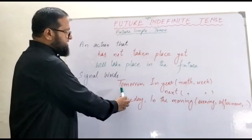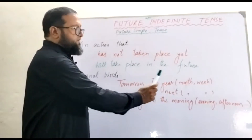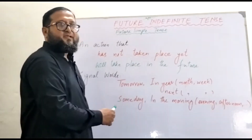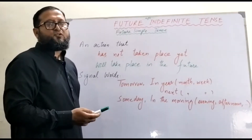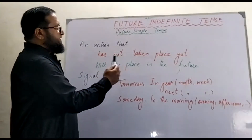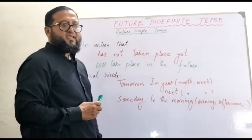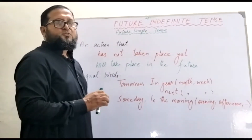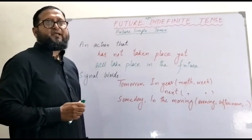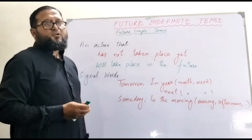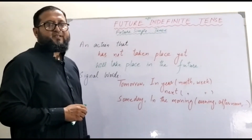There are some simple signal words that will help you easily identify future indefinite tense sentences. Words like tomorrow, in years, in months, in weeks, in next month, next week — you will easily recognize that these sentences probably describe future indefinite tense. Or someday, in the morning, in the evening, in the afternoon. With the help of these signal words, you can easily judge, understand, comprehend, and write sentences in future indefinite tense.